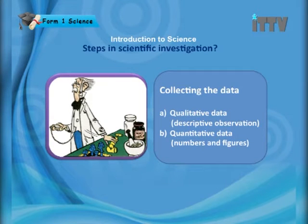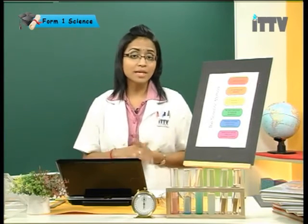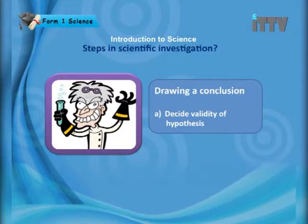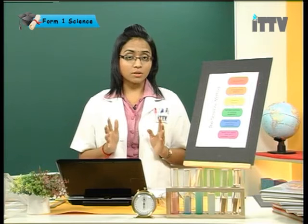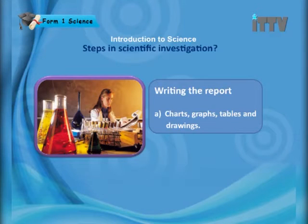Next is collecting the data. You can either have qualitative data, which is descriptive observation, or quantitative data, which is numbers and figures. After you collect the data, you analyze and interpret them — you find a pattern and find a meaning for the observation. When you carry out an experiment, you have to know the meaning of the results. Next is drawing a conclusion: you decide the validity of the hypothesis — whether it is true or not — which you created at the beginning of the experiment. Writing the report is the last part; you write it using charts, graphs, tables, and drawings. This is the main method used when you carry out a scientific method.